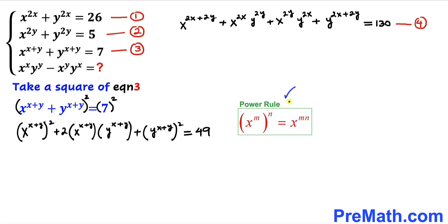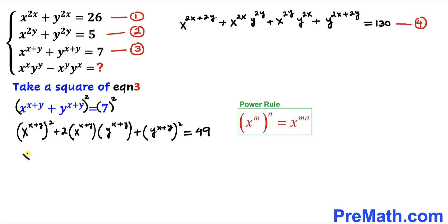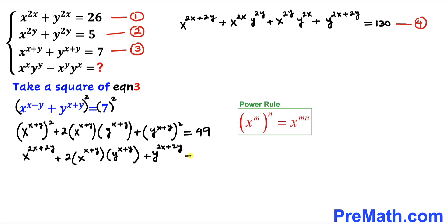Applying the product rule of exponents to multiply out the nested exponents, the first term becomes x^(2x+2y), and the last term becomes y^(2x+2y), giving us: x^(2x+2y) + 2 × x^(x+y) × y^(x+y) + y^(2x+2y) = 49. Let's call this equation five.